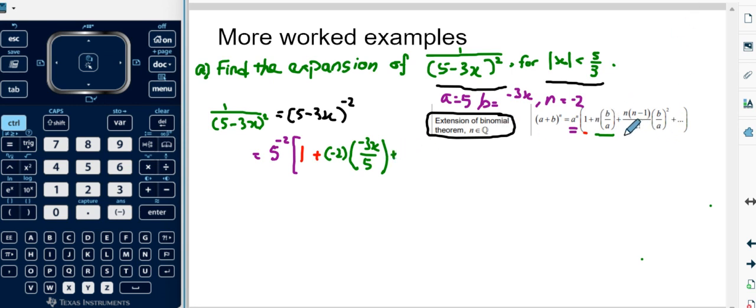which I'm going to use blue. This is negative 2 and then negative 2 minus 1 is negative 3 over 2 factorial, which is just 2, times b, so it's negative 3x again over 5, which is a, to the power of 2.